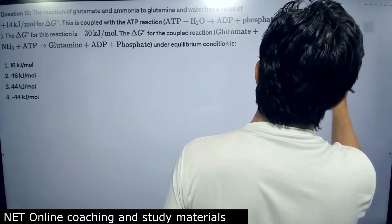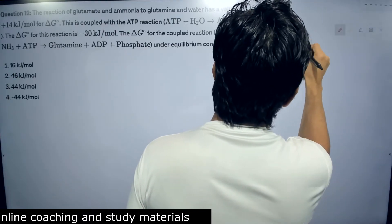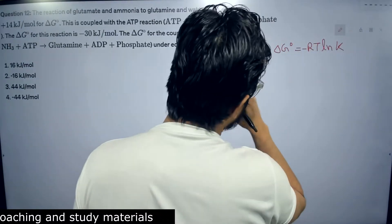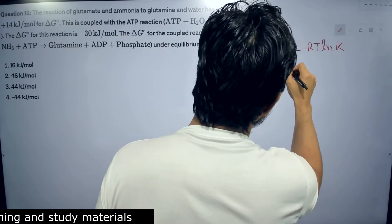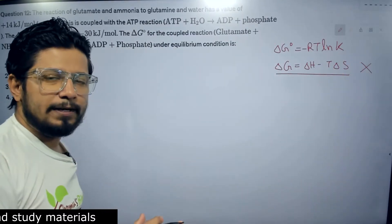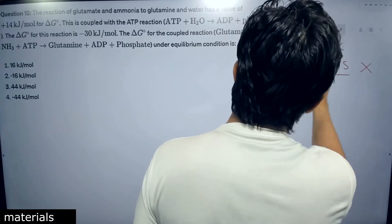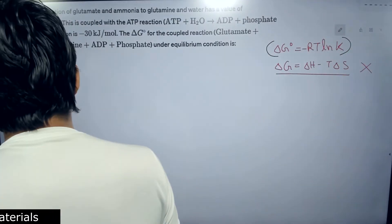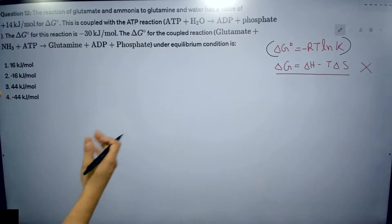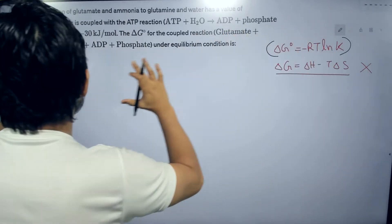Let me write the formula clearly. ΔG = -RTlnK — this is one formula for ΔG that we use. The second formula is ΔH - TΔS, but that second formula is not very much used in questions asked in CSIR NET, GATE, ICMR, DBT, and IIT JAM. The formula ΔG = -RTlnK is more often used. But in this particular case, we need to use the coupled reaction approach.